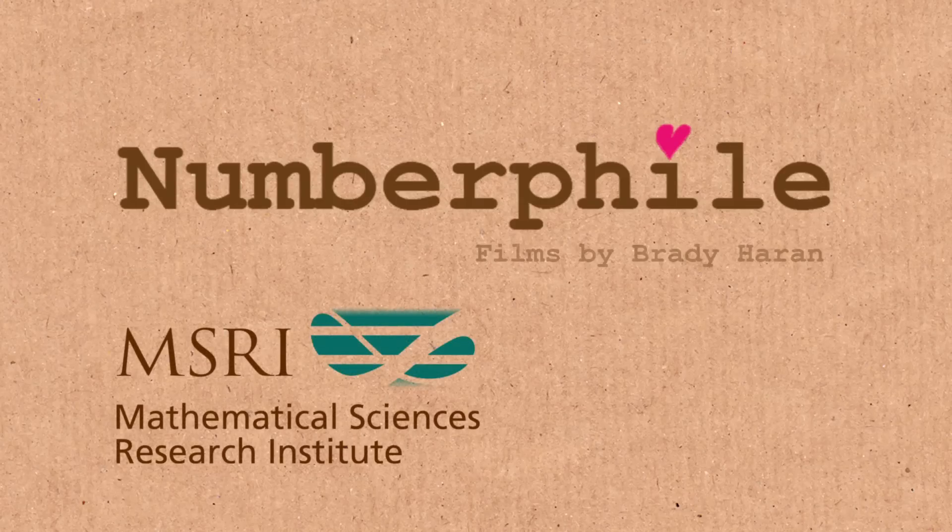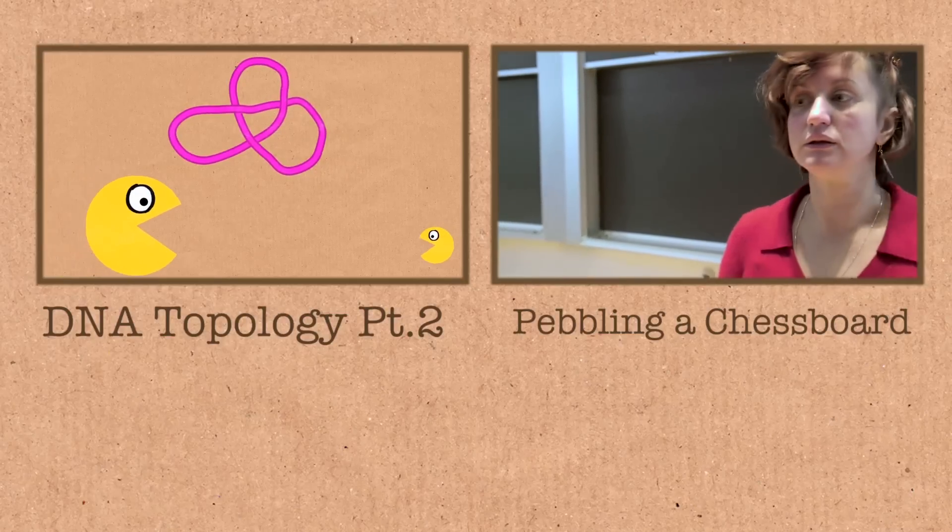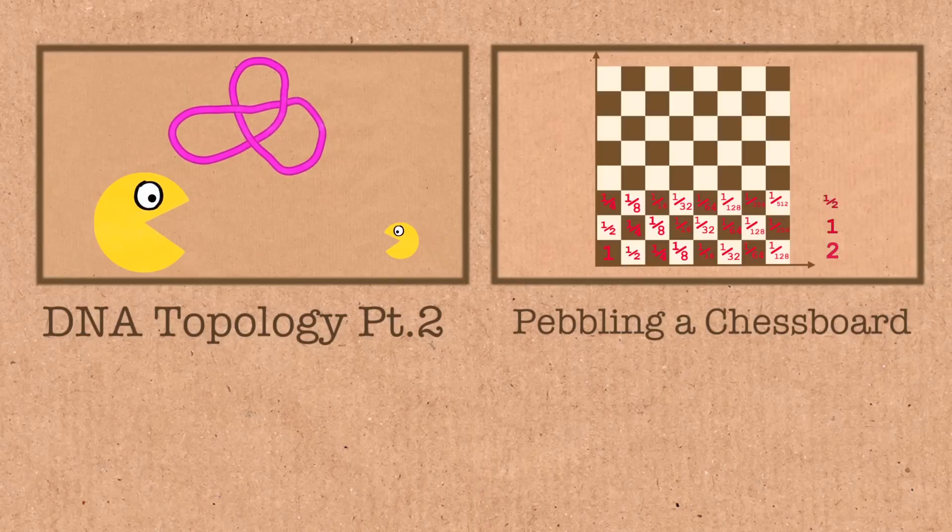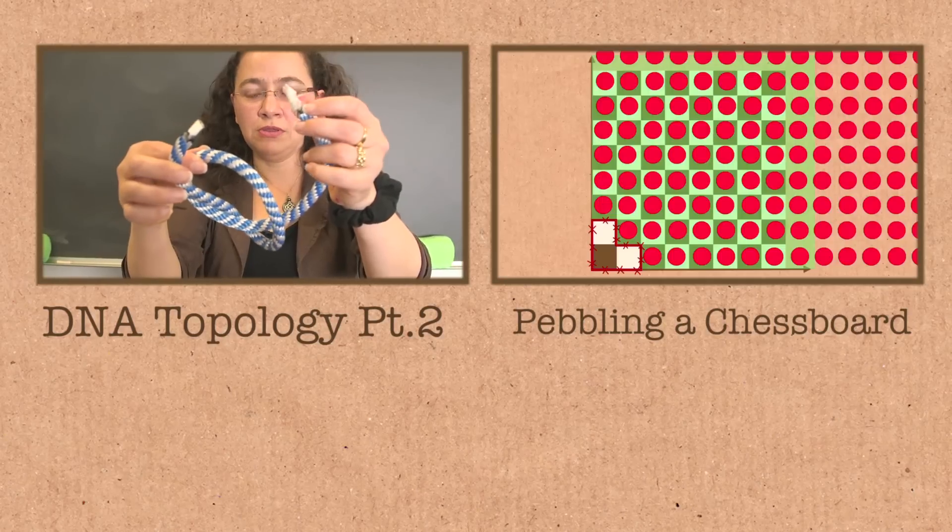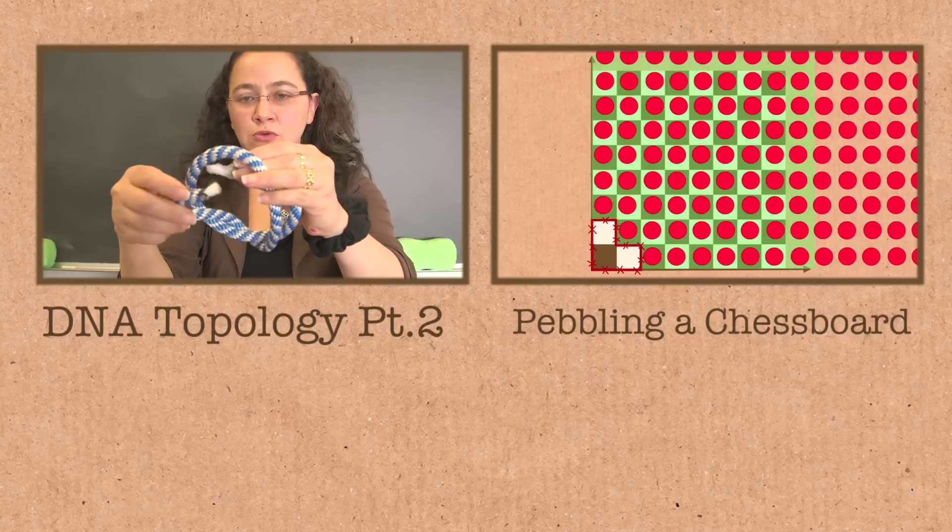Topological entanglement. So the cell has an army of enzymes that the moment they see a knot, they'll come here and say, oh look, there's a knot here. Okay, we need to break it. They open, they break, they transport...